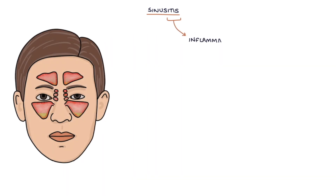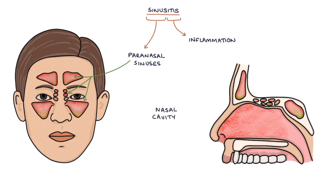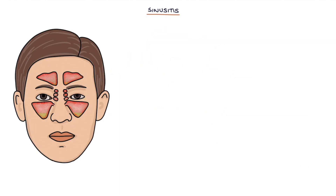Sinusitis refers to inflammation of the paranasal sinuses in the face. This is usually accompanied by inflammation of the nasal cavity inside the nose, and it can be referred to as rhinosinusitis, rhino referring to nose. Sinusitis is very common and can be classified as acute sinusitis lasting less than 12 weeks, or chronic sinusitis which lasts more than 12 weeks.